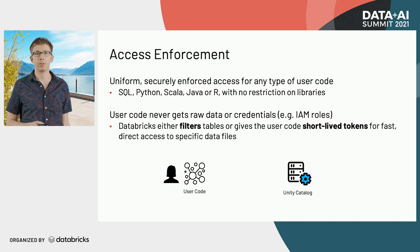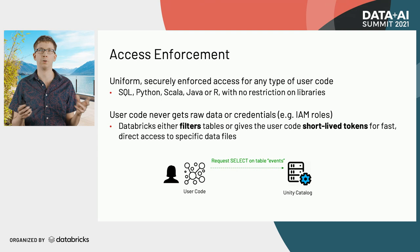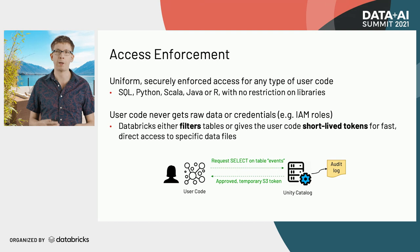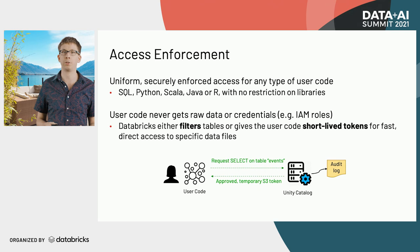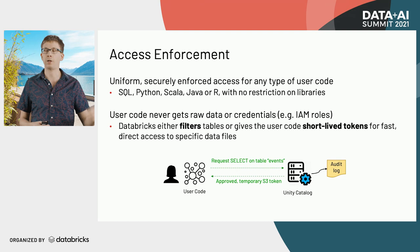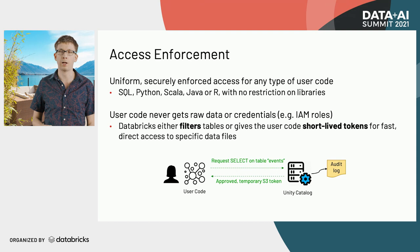As an example, if user code asks to select data from a table called events and the user is allowed to read the whole table, the Unity Catalog will check permissions, audit the access, and then give the user code a temporary STS token that allows it to read just those files within the events table. This transfer will be extremely fast when the user has full permissions — basically as fast as if the catalog weren't running in front of it — but much more secure than giving an IAM role because it will always be in sync with the table definition. And if the user was only allowed to select a subset, we would just filter the data first before giving it to that user.